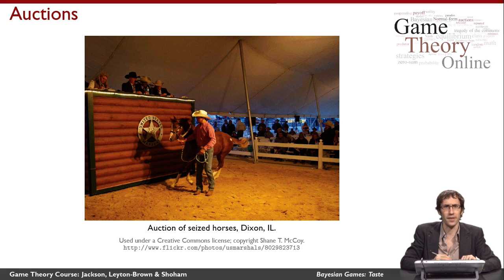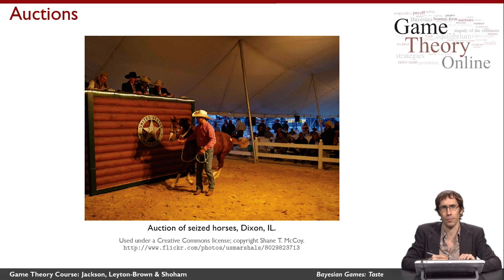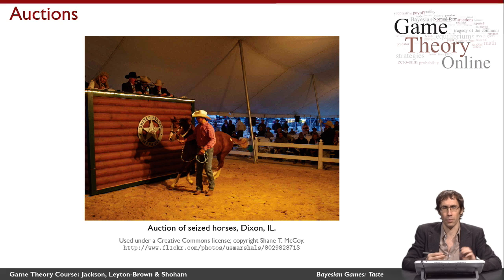Again, you can see why an auction might be used here because the value of something like a horse is pretty unclear. It depends on supply and demand, on intangible things like the quality of the horse and the number of other good horses on the market at a given time, and so on.